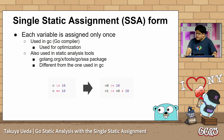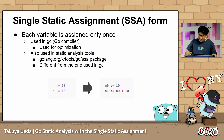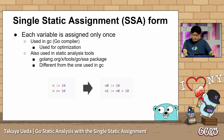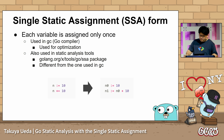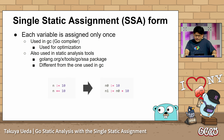Single Static Assignment, SSA, is a form where each variable is assigned exactly once. This technique is used in the Go compiler, GC, for optimization. SSA is also viable for static analysis tools.